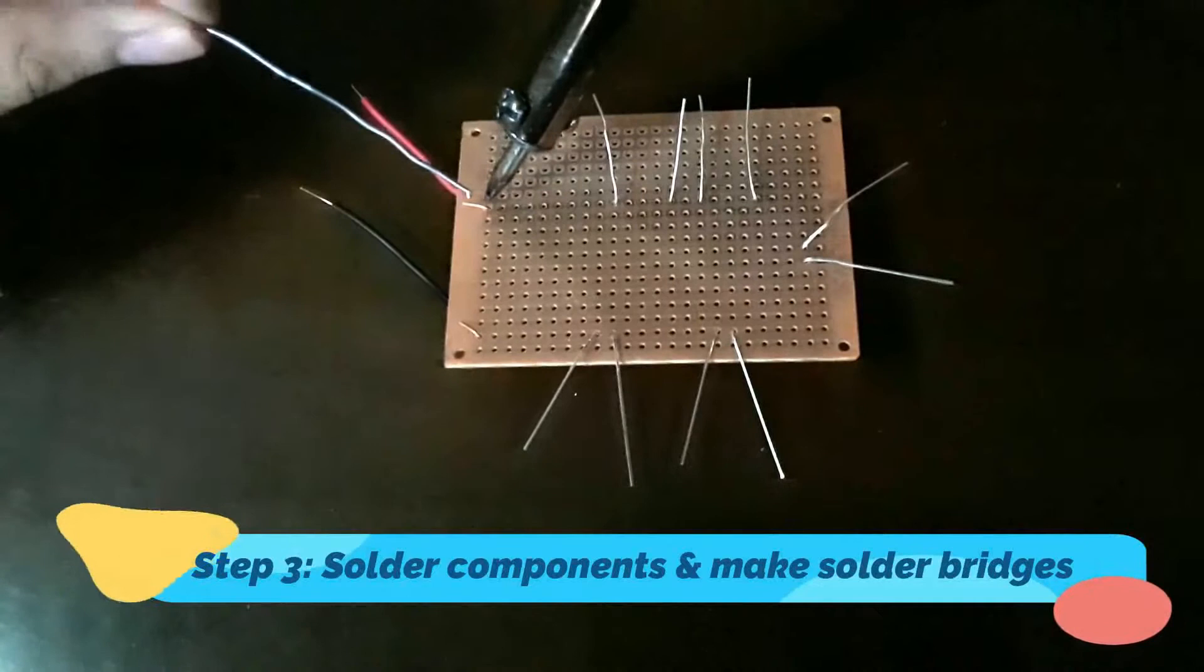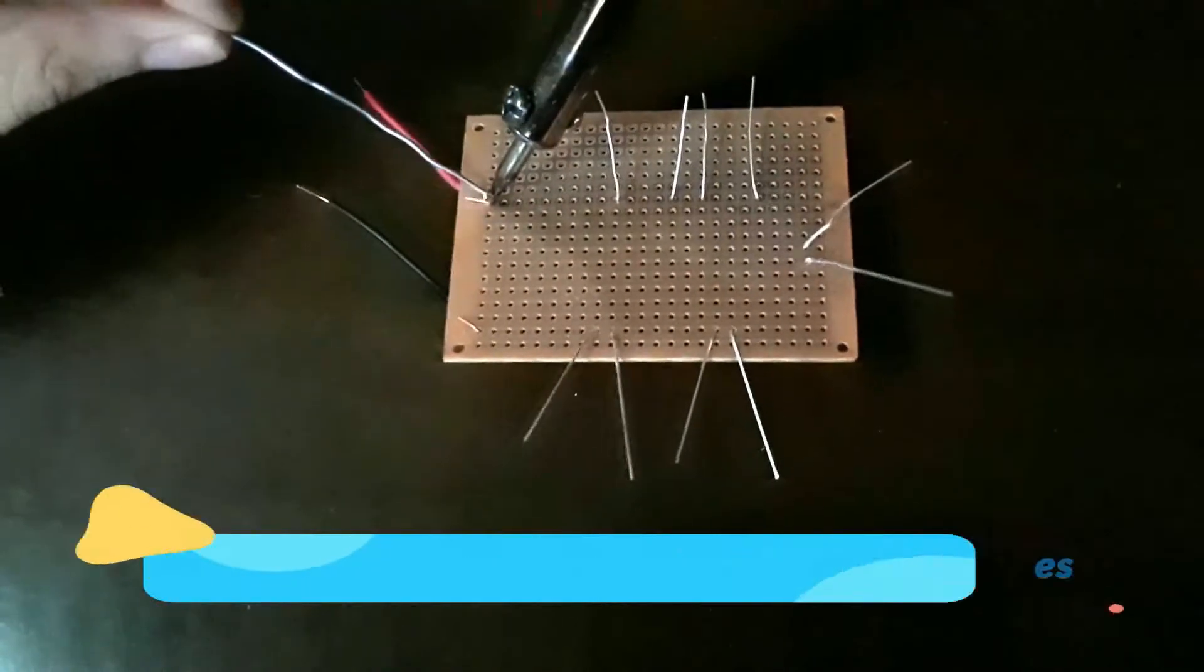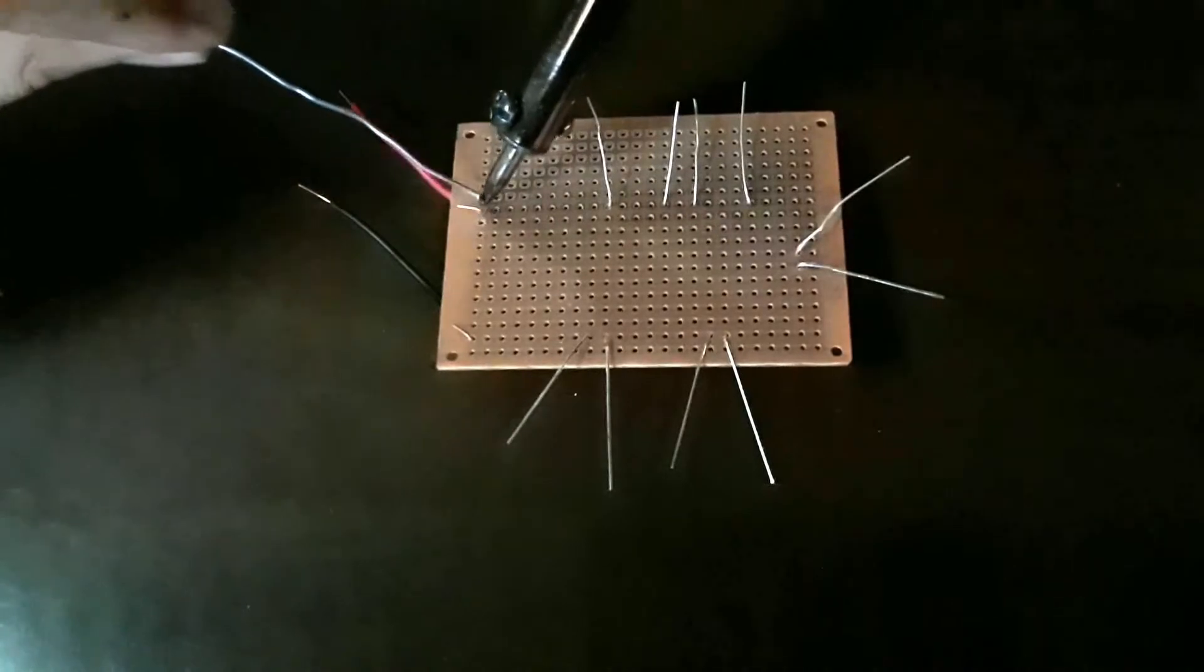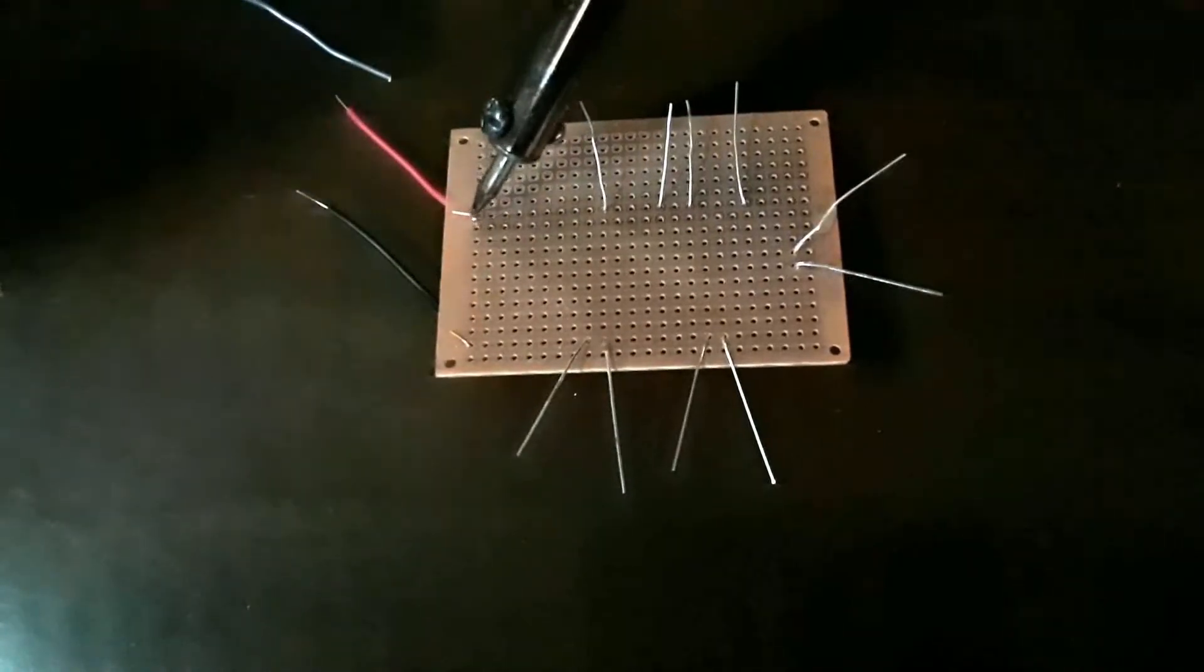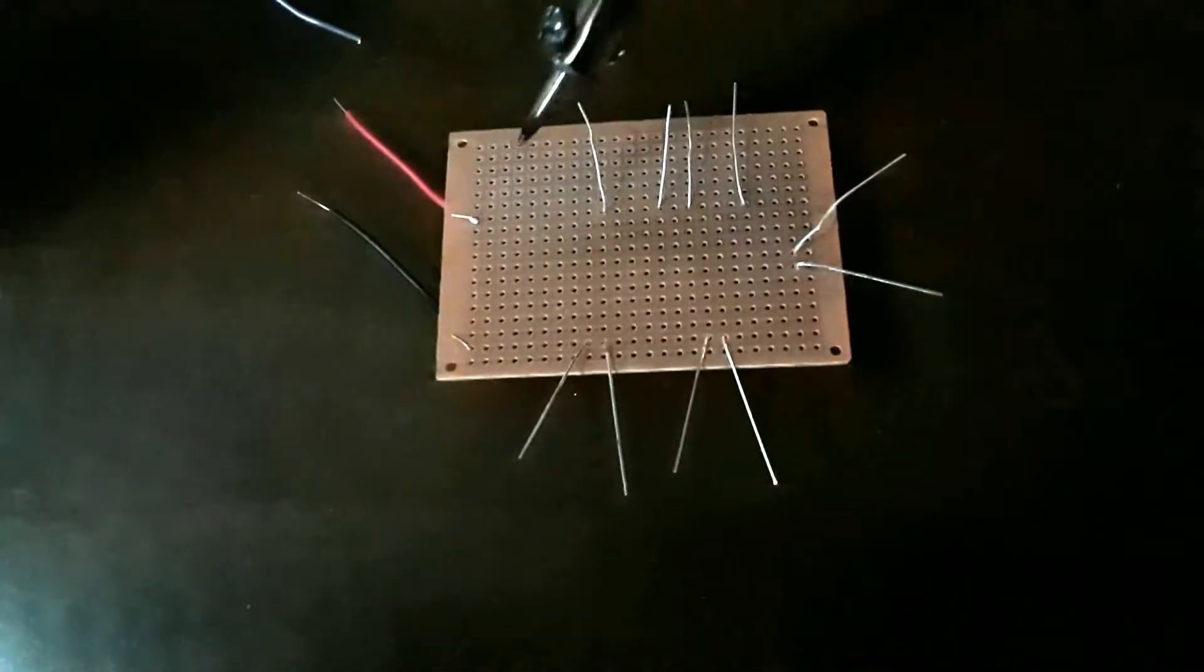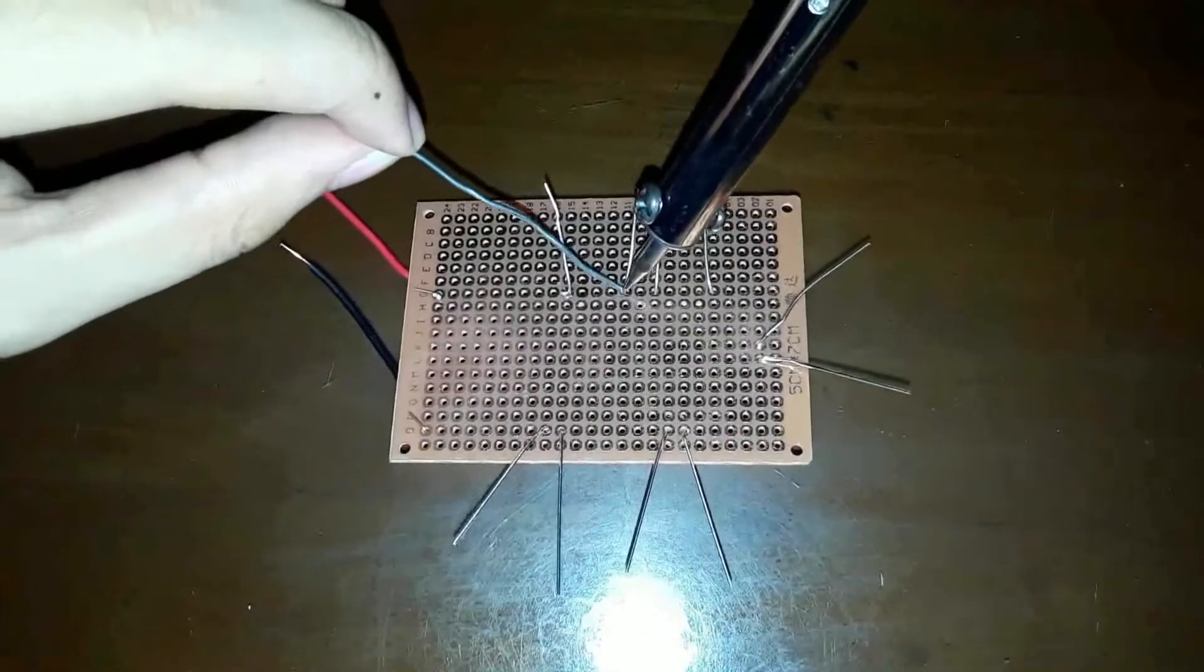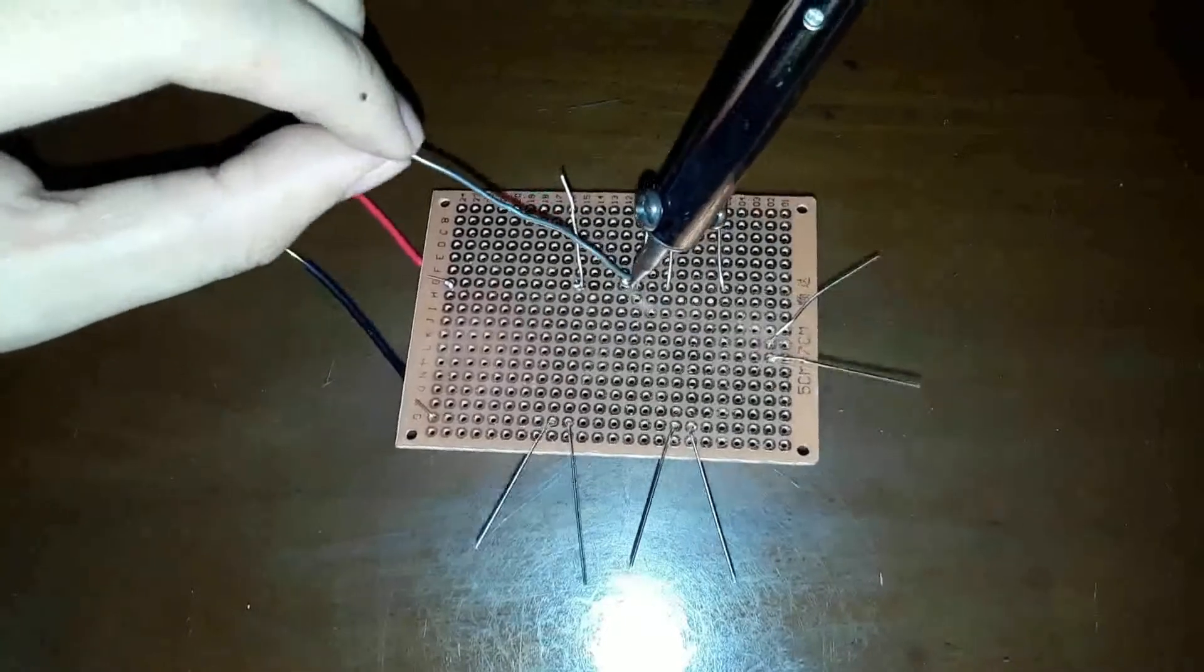Step 3: Solder components and make solder bridges. Let's solder each hole with pin on it. Take note, be careful when using soldering iron because the soldering tip is very hot. It is also recommended to put on a face mask while soldering because of the smoke.